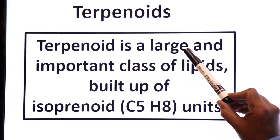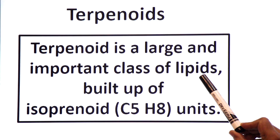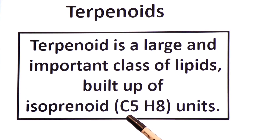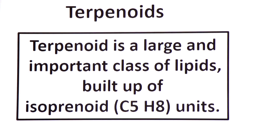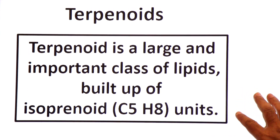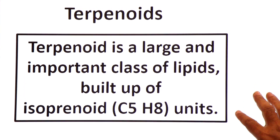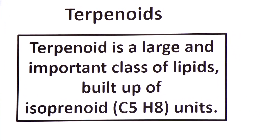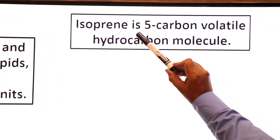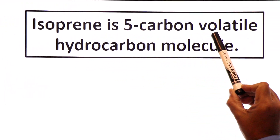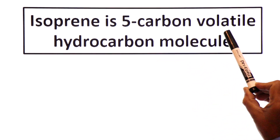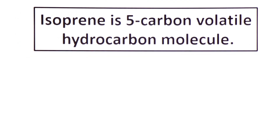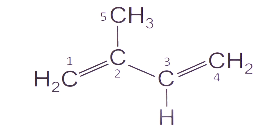Terpenoid is a large and important class of lipids, built up of isoprenoid units whose chemical formula is C5H8. Isoprene is a 5-carbon volatile hydrocarbon molecule. Volatile means easily converted into vapors. This is the structure of the isoprenoid unit.